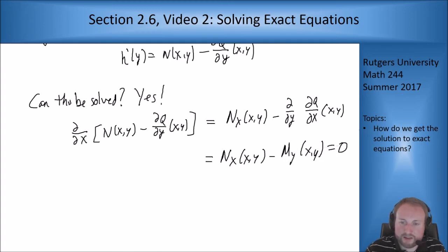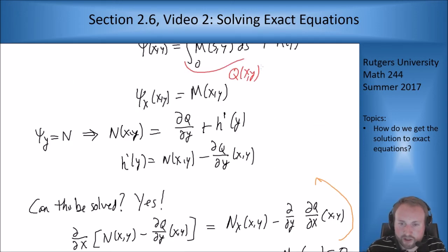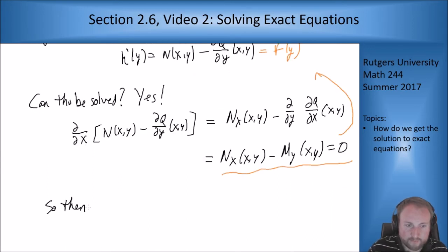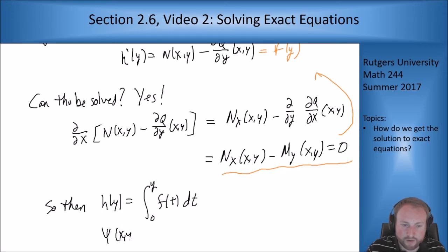So that means this fact here means that this is actually some function f(y). Which means now I can solve for h just by integration. So then h(y) equals some antiderivative of that function f. And then ψ(x,y) is q(x,y) + h(y) does the job.